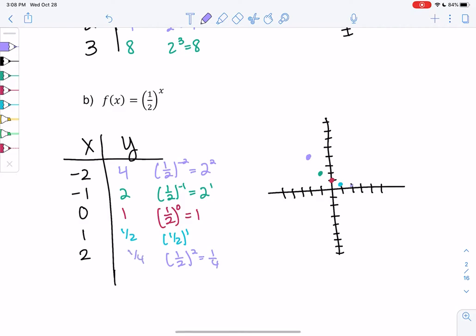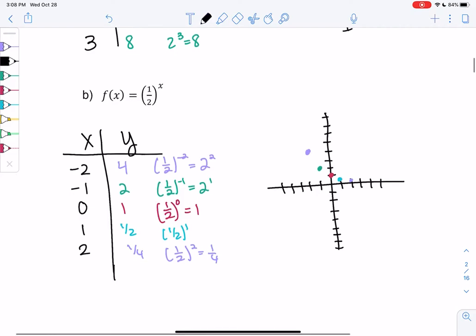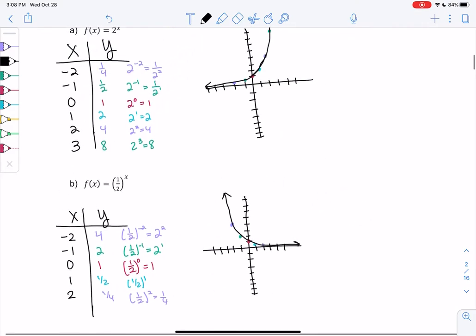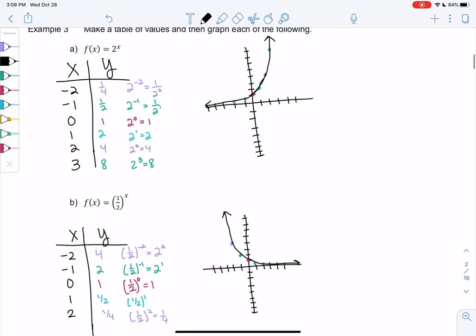So we're getting the same numbers, just kind of in different spots. And it looks like we actually get the same shape but backwards. So we're really tall on the left side and then we flatten out on the right side. So they look like the same shape but opposite.